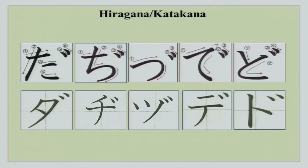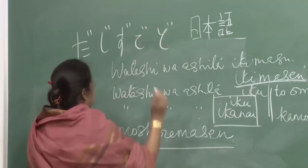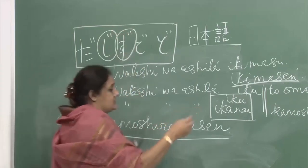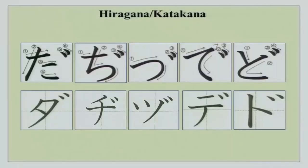Now we have katakana — this is the da series: da, ji, zu, de, do. In hiragana, certain forms are not used; the standard forms are da, ji, zu, de, do. In katakana, all these syllables — da, ji, zu, de, do — are used. This is your da series clearly given for you. You can practice.